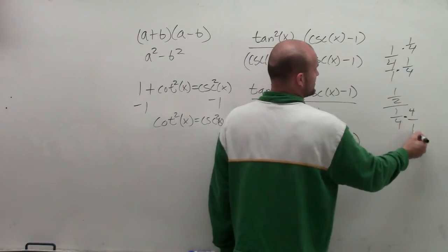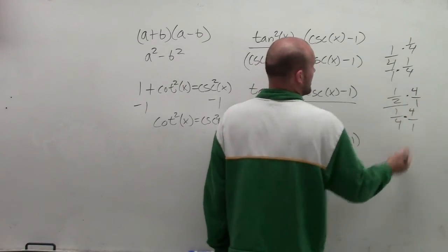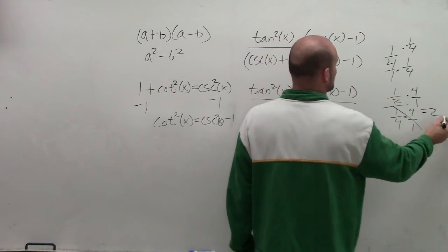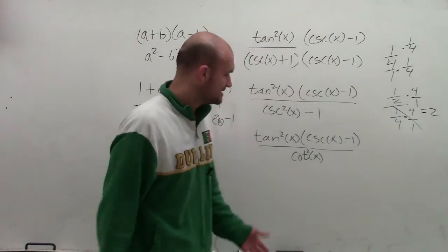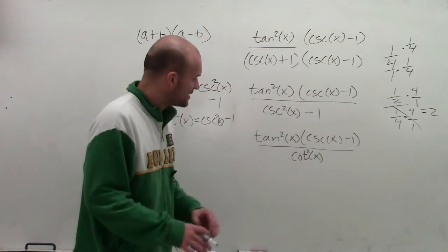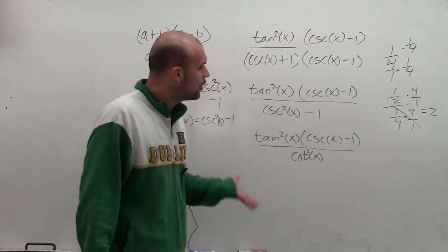Well, here you're going to multiply by the reciprocal, which would be 4 over 1. And what happens is that's now going to get rid of your denominator. So I look at a problem over here, and I say, what's the reciprocal of cotangent squared?